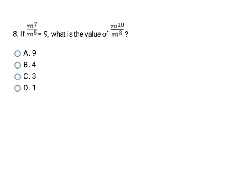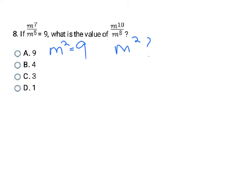This problem is similar but uses division. Given m to the 7th over m to the 5th equals 9, find m to the 10th over m to the 8th. Simplify both: dividing with matching bases means subtracting exponents. 7 minus 5 is 2, so m to the 2nd equals 9. Then 10 minus 8 is also 2, so the second expression is also m to the 2nd, which also equals 9 — final answer A.